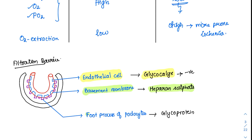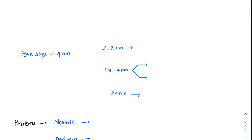Finally, we have the foot processes of podocytes on the outer side, which also have glycoproteins. Essentially, all these structures carry negatively charged particles, which repel other negatively charged particles. The pore size is just 4 nanometers — very very small — but helpful in limiting what gets filtered into the GFR. Only specific substances are allowed through.